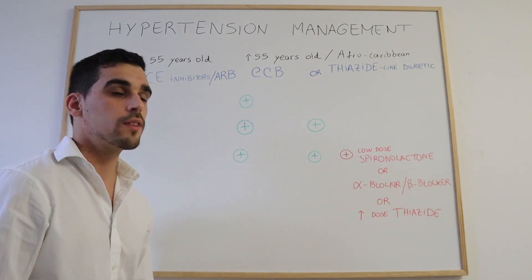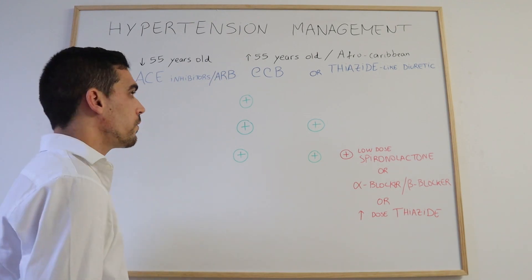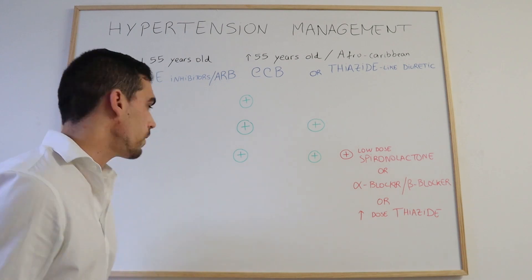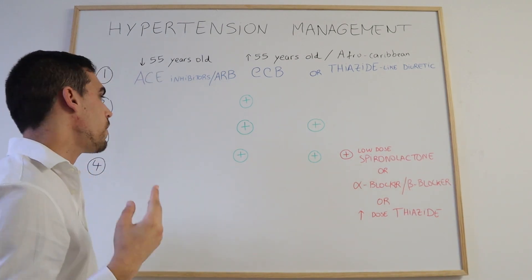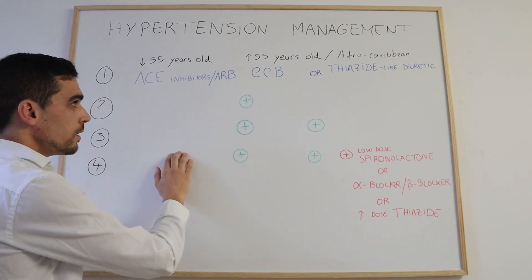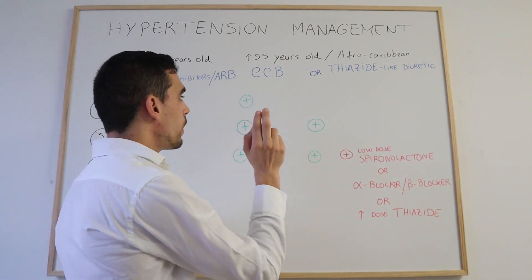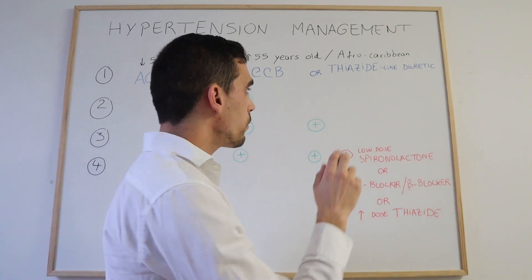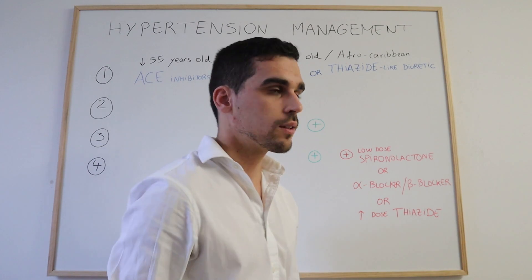If stage 2 is still not enough to bring down the blood pressure, we move to stage 3. In stage 3 we have three anti-hypertensive drugs: an ACE inhibitor or ARB, a calcium channel blocker, and a thiazide-like diuretic.